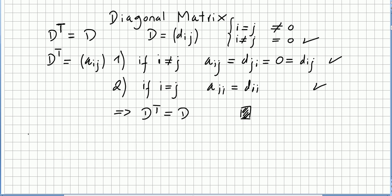It is also obvious that the identity matrix transpose will be equal to the identity. You say that the identity is a diagonal matrix, and it is proved here that the transpose of a diagonal matrix is equal to the matrix itself, so the identity matrix transpose is equal to the identity.